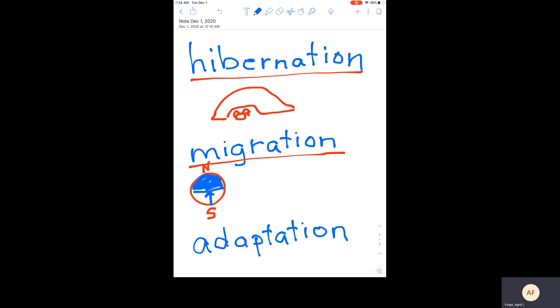Birds will migrate and fly south towards the equator to a place where it stays warmer in the winter. And then whenever it starts to warm up, they come back north to where we are.